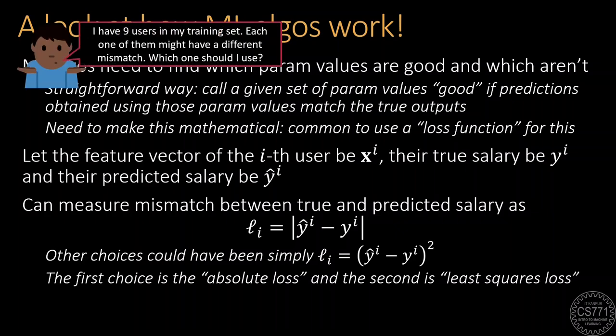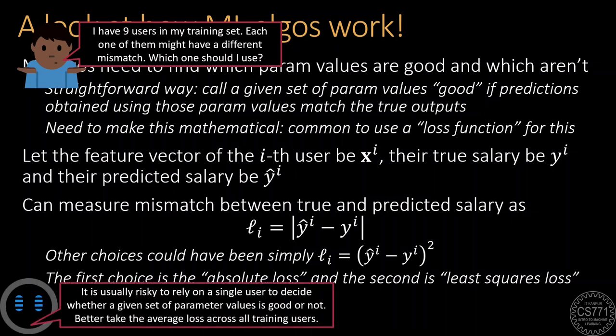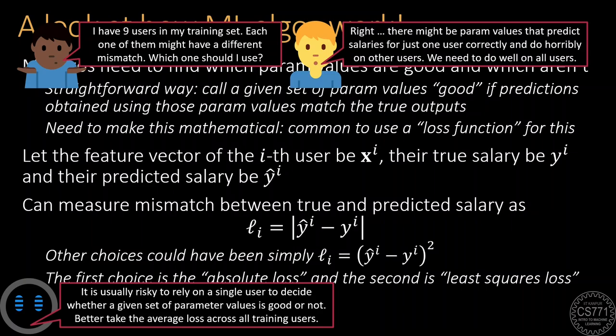Now note that our training data will have several maybe hundreds or thousands of training points and a given set of parameters might give a different mismatch for each one of them. It's a bit risky to rely on a single data point to figure out which parameter values are good and which are bad because there could exist parameter values that do very well on just one data point but will do horribly on the rest. For such reasons it's usually common to take the average mismatch across the training data points to figure out which parameter values are good and which are bad.